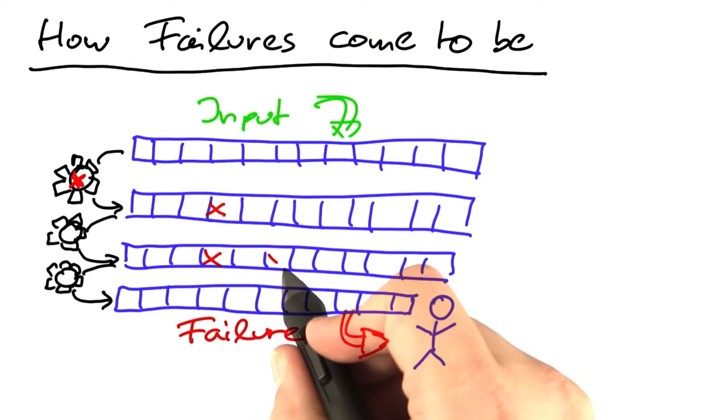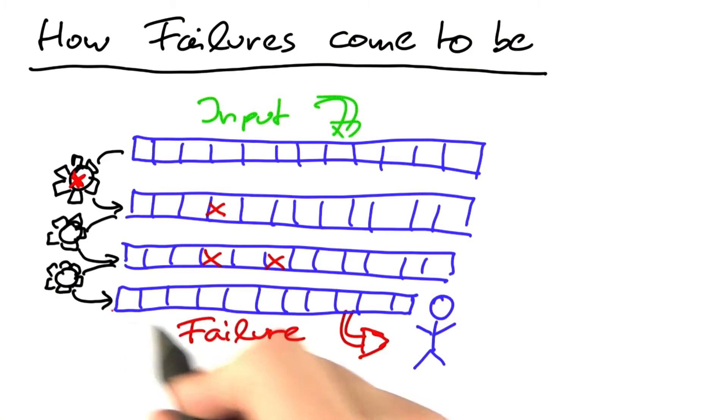This infection is now being propagated, possibly to other states, and eventually becomes visible as a failure towards the user.